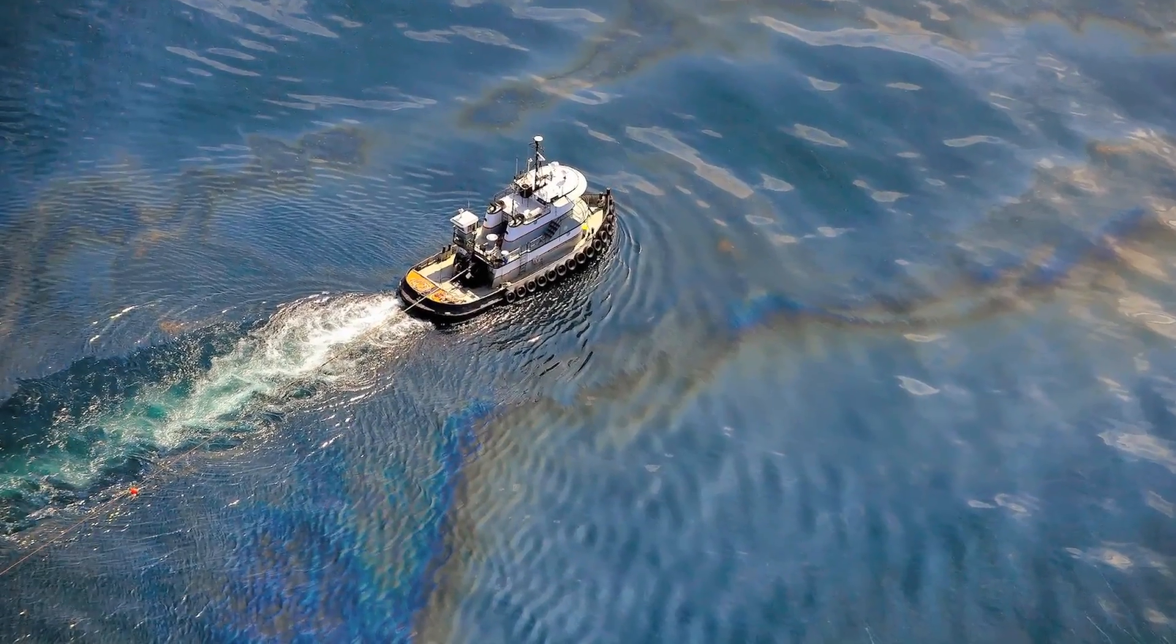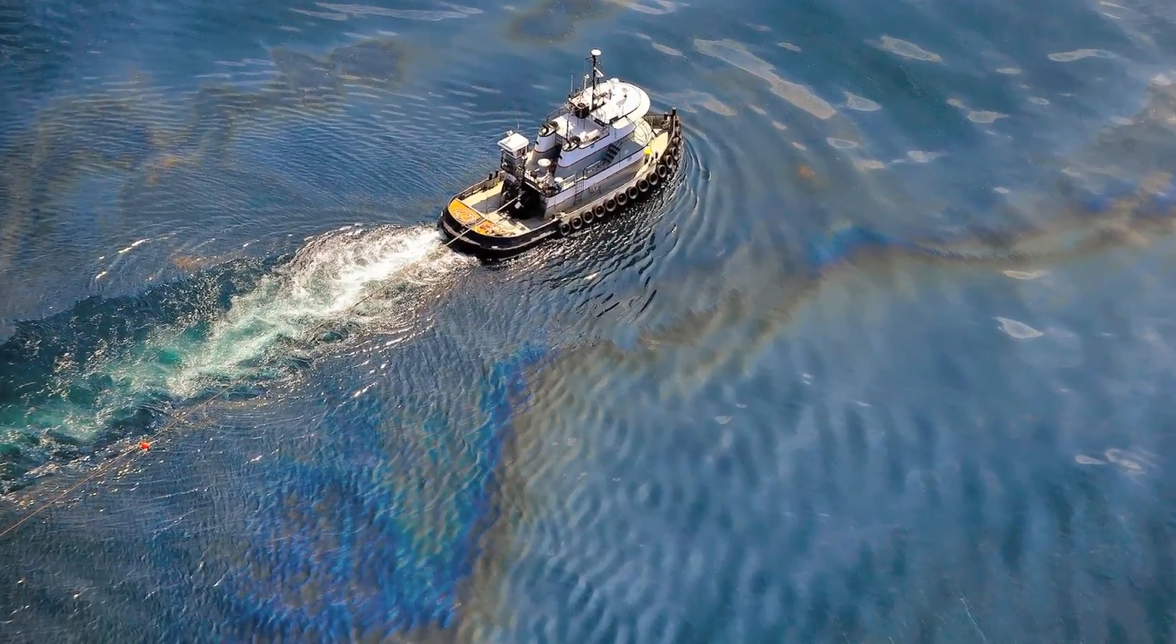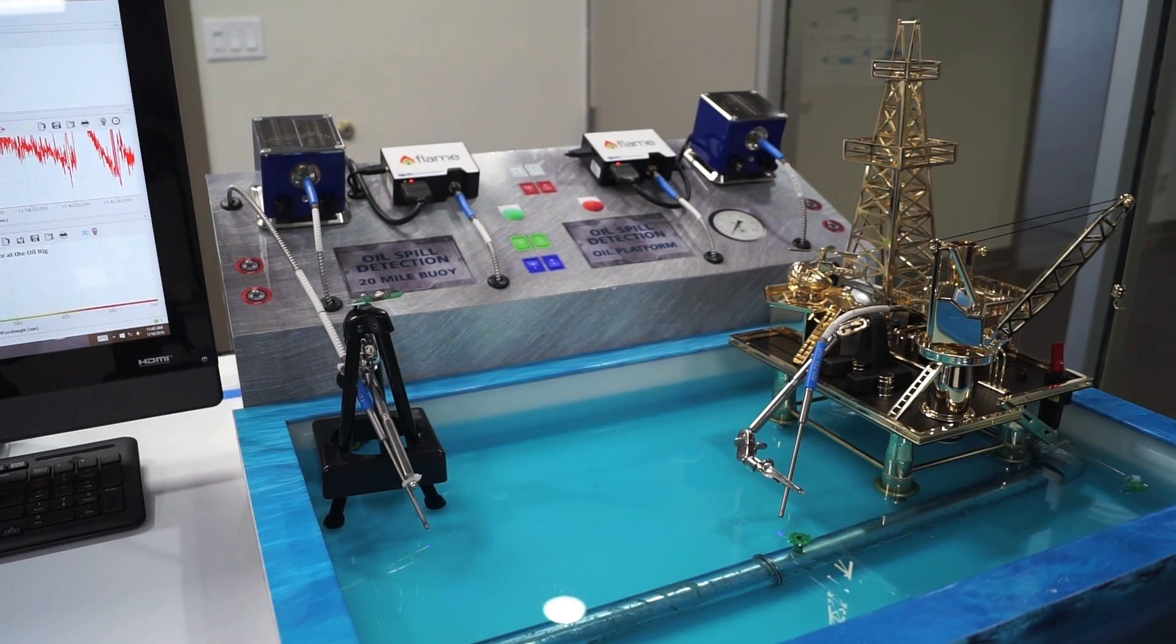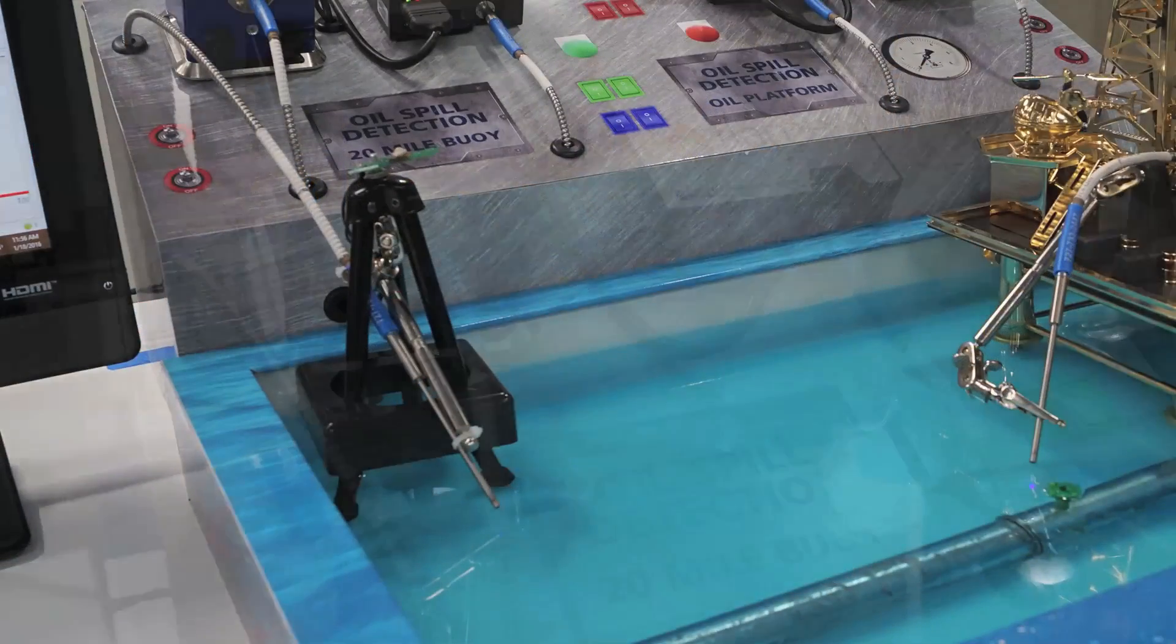One very important environmental monitoring application is the detection of oil and water. What we're showing here is the use of modular spectroscopy to continuously monitor the ocean both at an oil rig and also at a buoy 20 miles away.